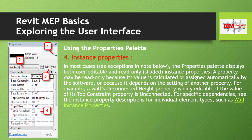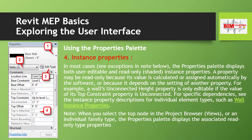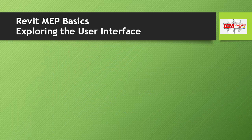Point four — Instance Properties: in most cases the Properties Palette displays both user-editable and read-only instance properties. A property may be read-only because its value is calculated or assigned automatically by the software, or because it depends on the setting of another property. For example, a wall's Unconnected Height property is only editable if the value of its Top Constraint property is 'Unconnected.' Note: when you select the top node in the Project Browser, the Properties Palette displays the associated read-only type parameters.